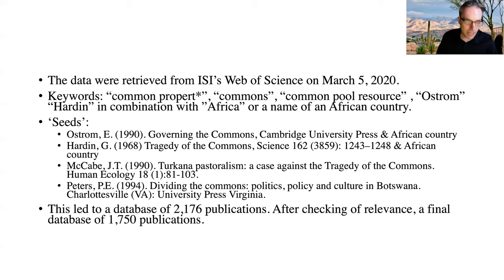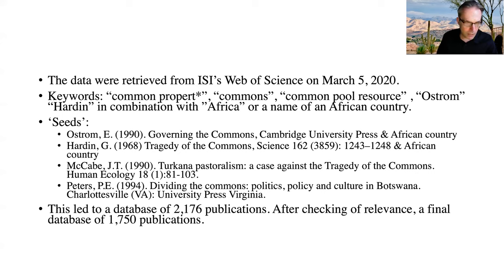This led to a database of 2176 publications. Next, we checked each of those publications whether they were relevant. Publications could have entered the database because they had a Creative Commons attribution written within the abstract, or the research was about African Americans.